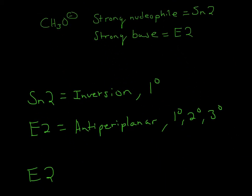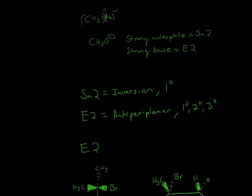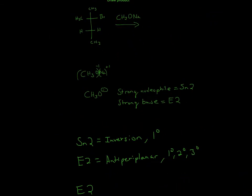Since it's a tertiary carbon — that's 3° — and SN2 only prefers 1°, that means this will be E2. And if it's E2, to figure out how we'll draw our final product, we need this to be anti-periplanar.